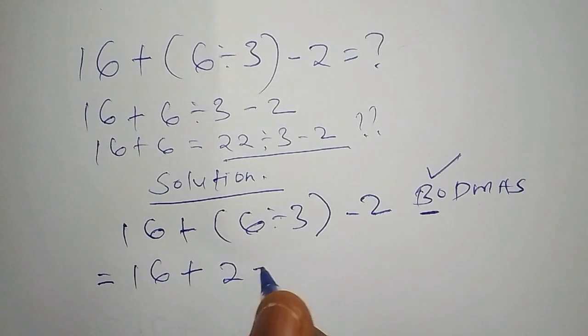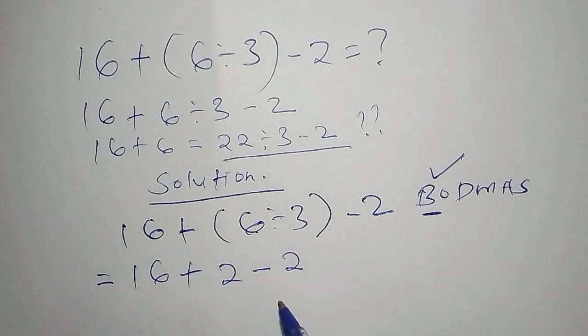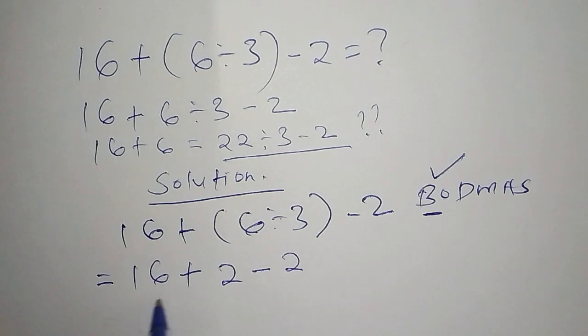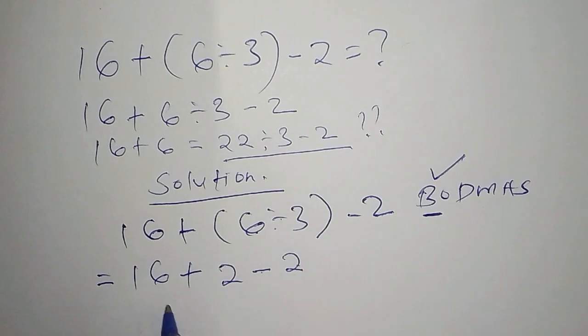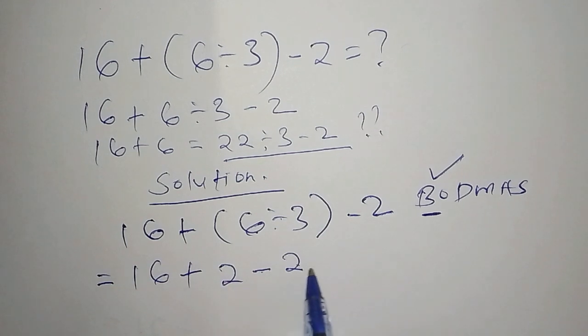After we've reached this stage, don't make the mistake of saying 16 + 2 - 2. When you say 2 - 2, that's automatically 0. So when you have 16 + 0, the answer you'll get is 16, but you won't have followed the correct method.